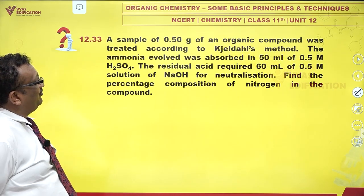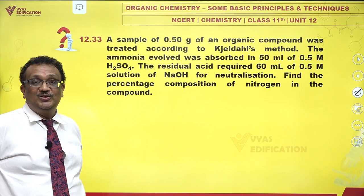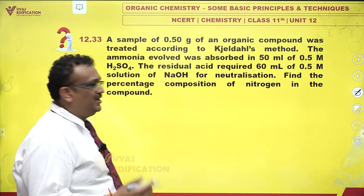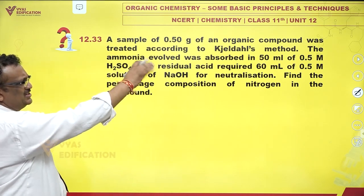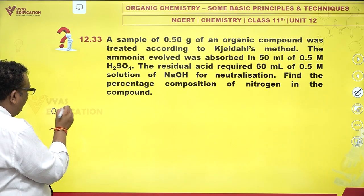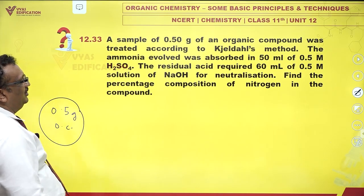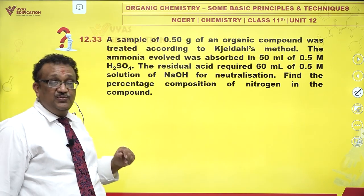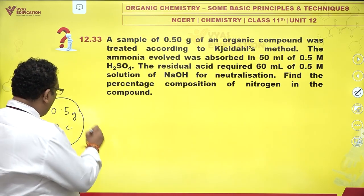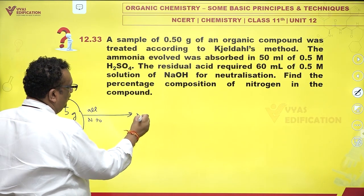A sample of 0.5 grams of an organic compound was treated according to Kjeldahl's method. We have 0.5 grams of an organic compound. In Kjeldahl's method, all the nitrogen is converted to ammonia — so all nitrogen goes to ammonia.